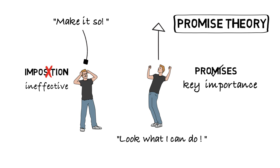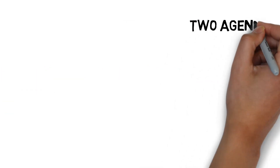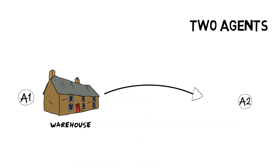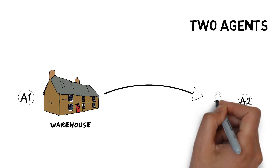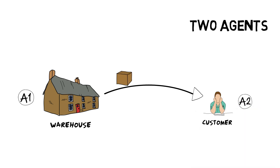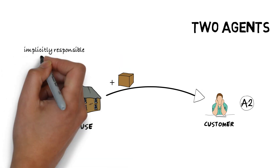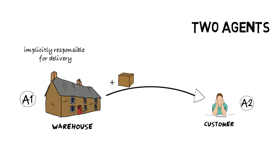For even two agents to cooperate they both need to make promises. So suppose one agent, say a factory warehouse, promises another agent, say a mail order customer, delivery of a package. The first agent can only promise its own behaviour, so it's implicitly responsible for delivery, in person so to speak.